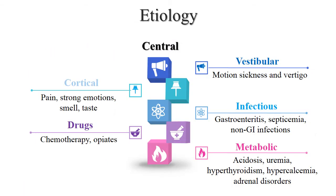Now, Etiology. There are two different etiologic factors: central and peripheral. Central causes include vestibular — due to motion sickness and vertigo — and cortical causes like pain, strong emotions, strong smell and bad taste. Drugs like chemotherapy and opiates. Infections like gastroenteritis, septicemia, and non-gastrointestinal infections.